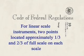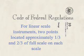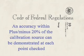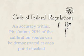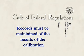For linear scale instrument calibration, at least two points located approximately one-third and two-thirds of full scale on each scale must be checked. Survey meters must be calibrated so that an accuracy within plus or minus 20% of the calibration source dose rate can be demonstrated at each point checked. Records must be maintained of the results of the calibration.